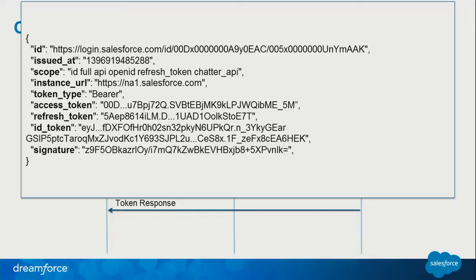The authorization code is sent back to the client application, which then hits a token endpoint on Salesforce. The grant type is authorization_code, and it passes in a client ID and secret. In the token response received by the client, you see standard OAuth attributes like ID, instance URL, etc. The most important one is the id_token, which is specific to the OpenID Connect protocol — very similar to the SAML token, but in JSON format with three parts: header, body, and signature.